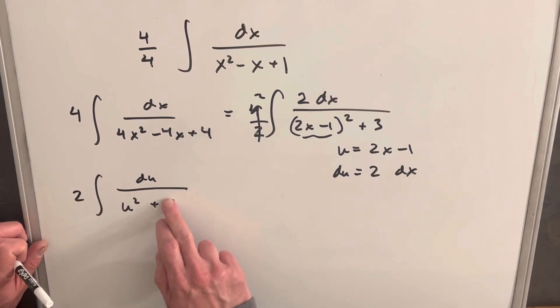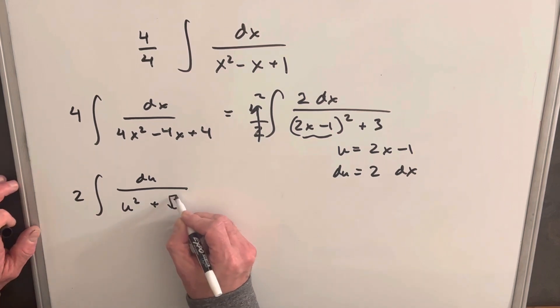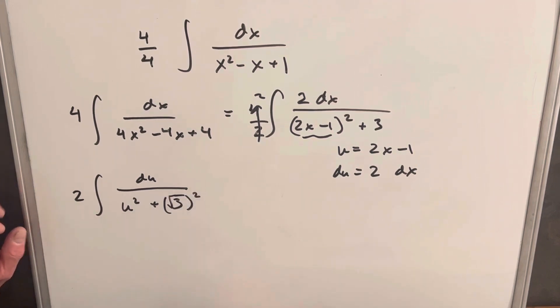All I need to do is let's just change this 3 a little bit. I'm going to rewrite this as square root of 3 squared. And now we have it in the form that we like.